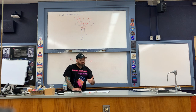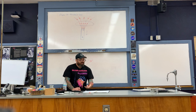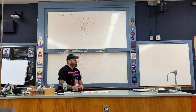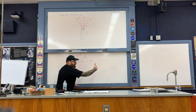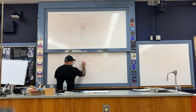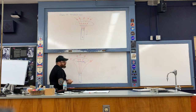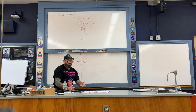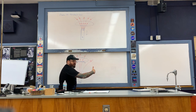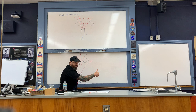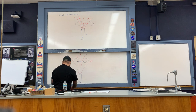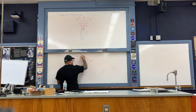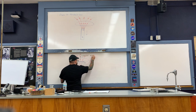The induced current that flows has to oppose the changing magnetic flux. In this case, the induced current has to flow in the opposite direction through the wire. Why does it have to flow that way? As the current flows like this through the wire, through Biot-Savart — end of chapter 28 — it creates its own magnetic field in this direction. Here is the induced magnetic field.